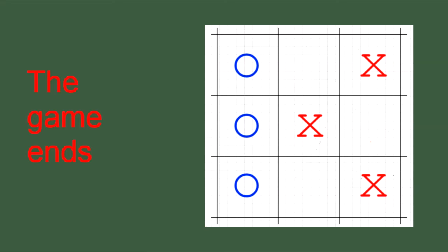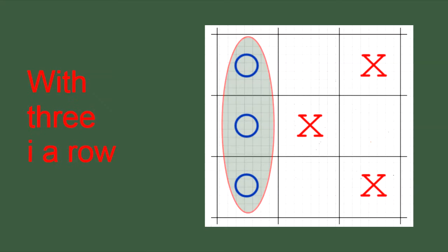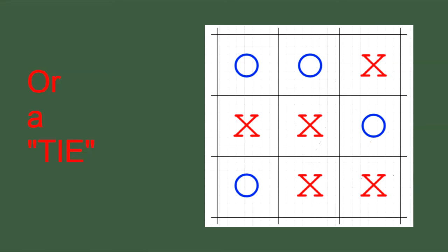The game is over when a player succeeds placing three marks in a row, or when all the spaces in the grid are marked. If the game ends without a win for any of the players it is called a tie.